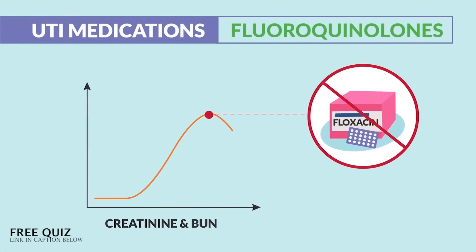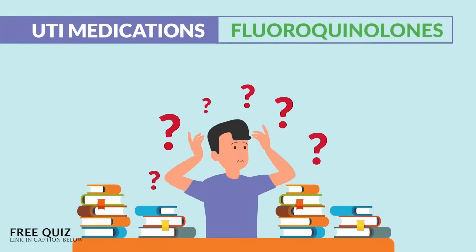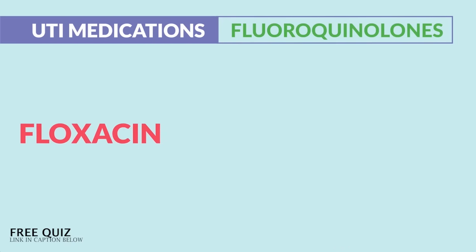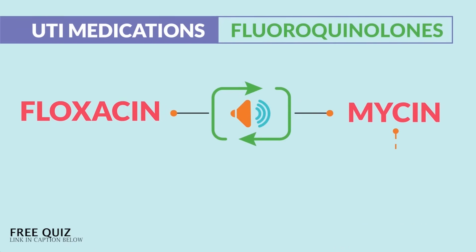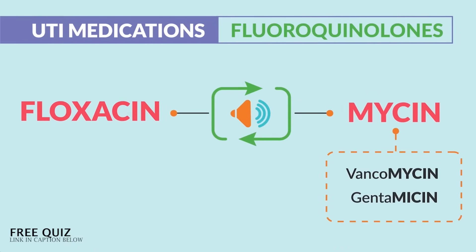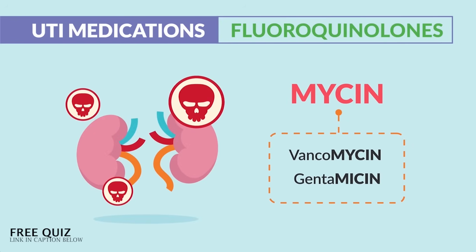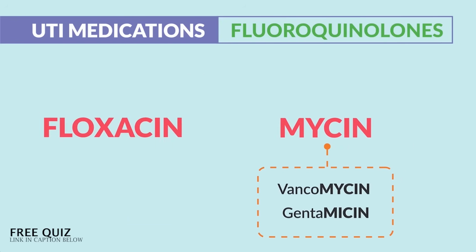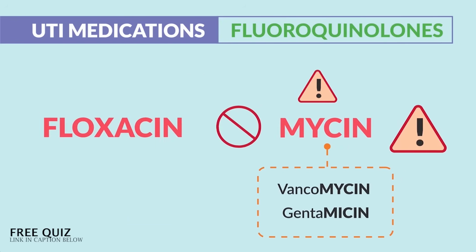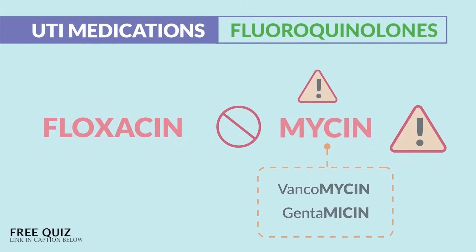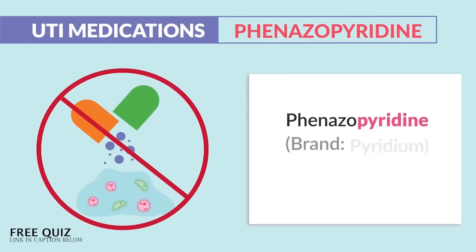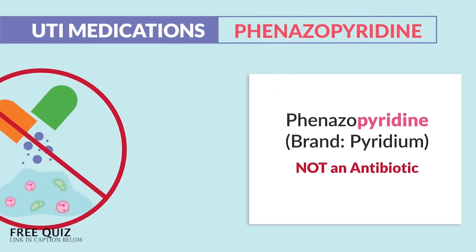Nephrotoxicity with fluoroquinolones is rare — don't get tricked. Many students want to avoid floxacin when creatinine and BUN are high, confusing it with aminoglycosides like gentamicin and vancomycin. Those are the antibiotics that damage the kidneys — the '-mycins' — not the floxacins.